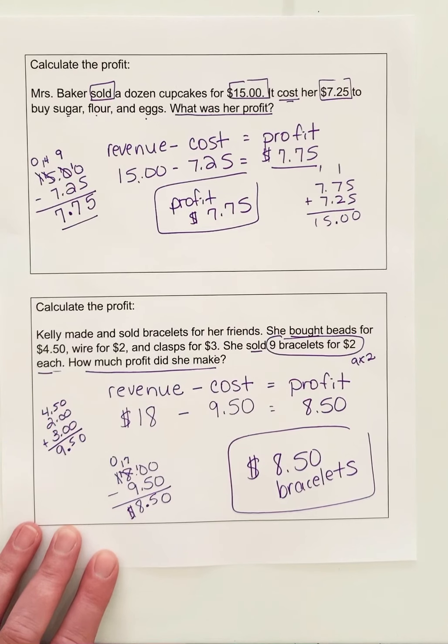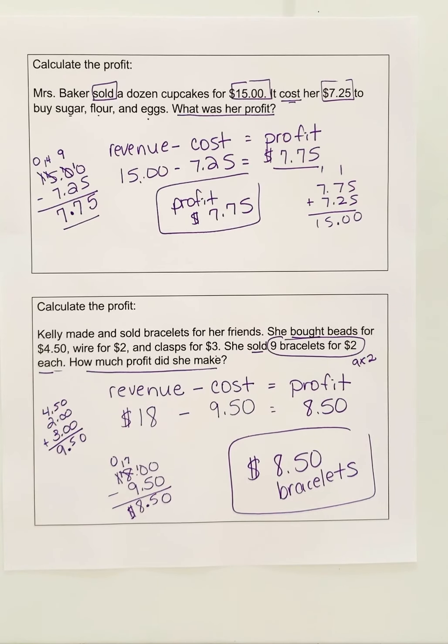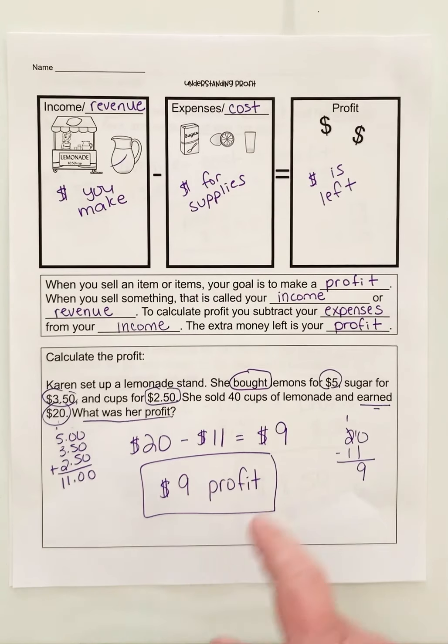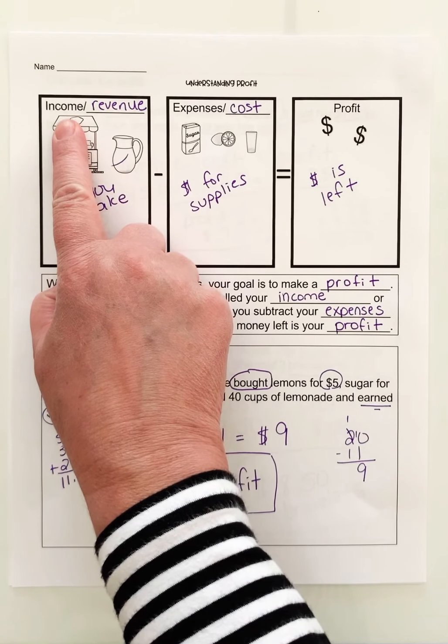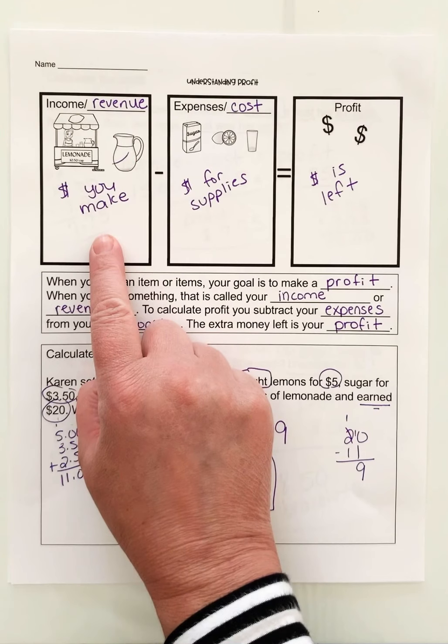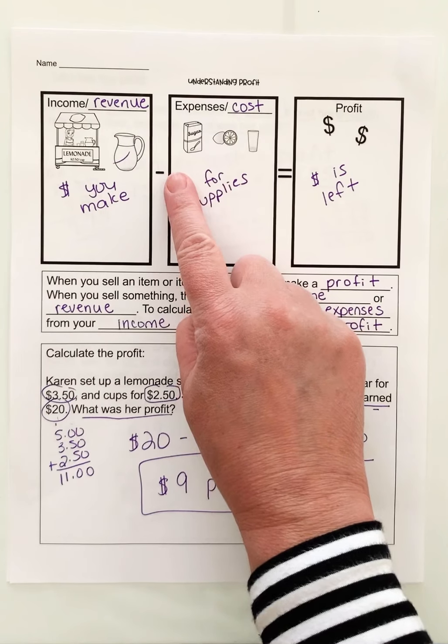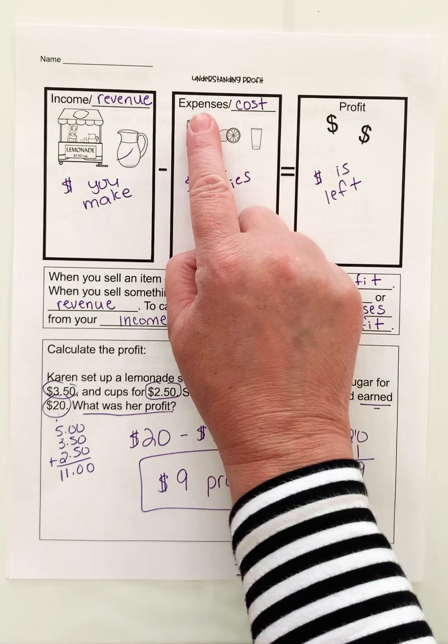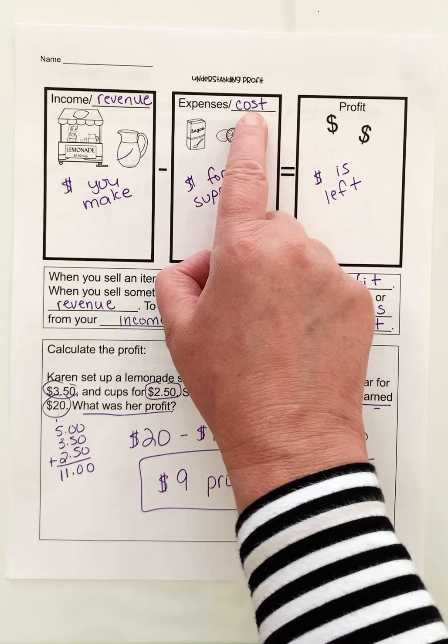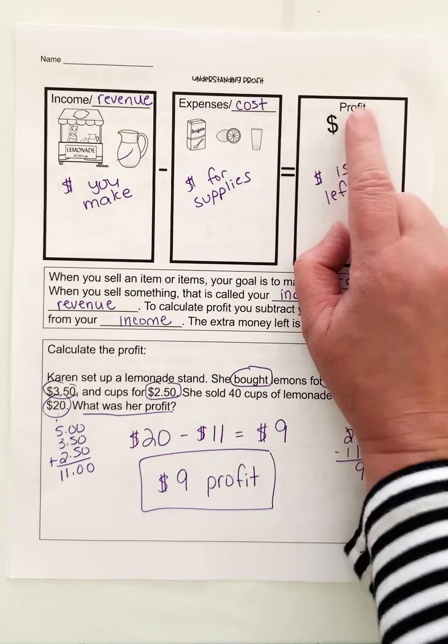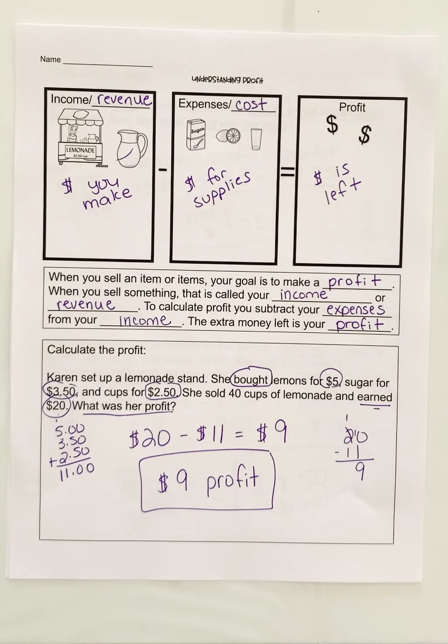Alrighty, that was her profit. Alrighty, I hope this helped you. As you take your quiz for your next step, it might be handy to have this in front of you. So again, let's kind of review. To calculate your profit, you take your revenue, which is also called your income. You take the whole amount of money that you make. You subtract out the money for your supplies, which is called your expenses or your cost. Just remember, supplies cost money. And then what is remaining is your profit. Okay, I hope this helped you. Thank you for watching.